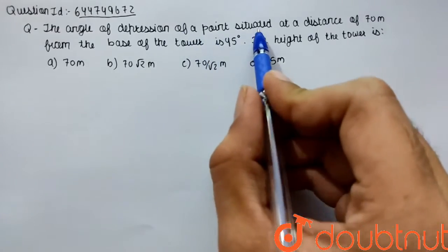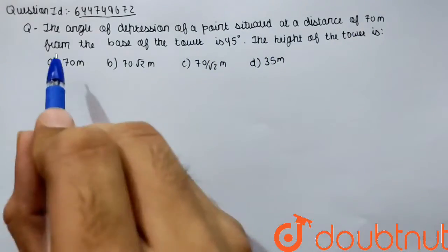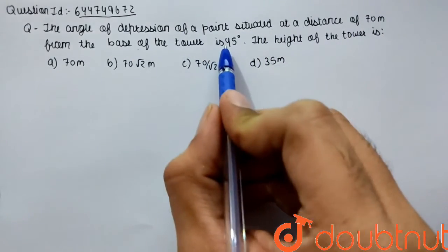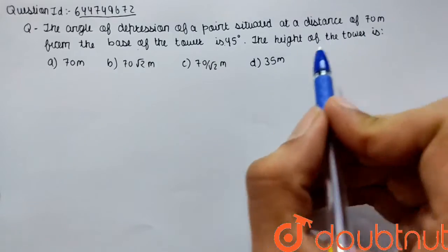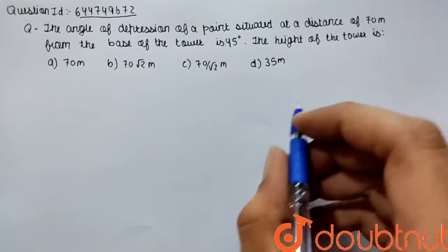The height of the tower is... So we have to find the height of the tower. Let's say this is tower AB of height h meters, right?